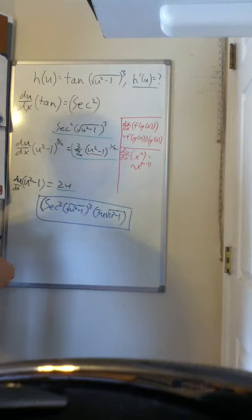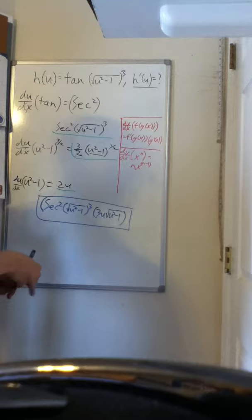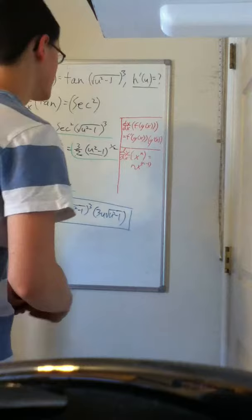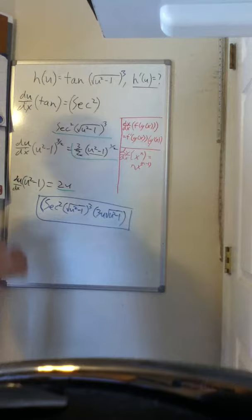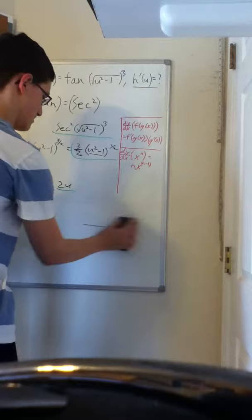Three over two minus one is one half. So we get an exponent of one half. But we're not done. Now we go for the final step. Taking u squared minus one.